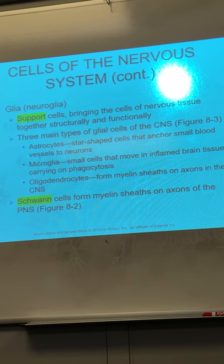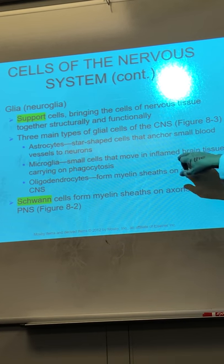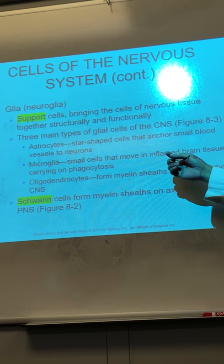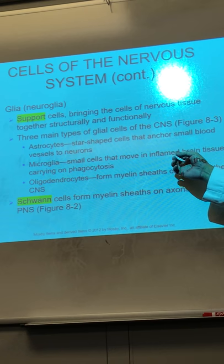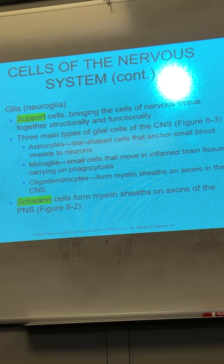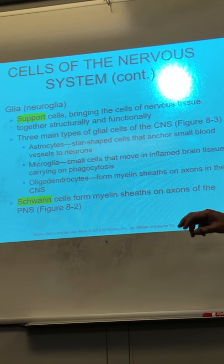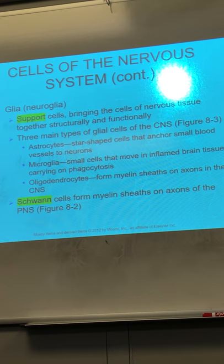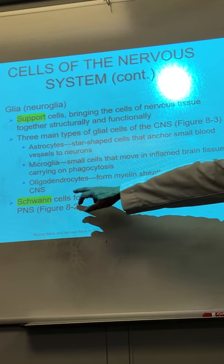Next are the microglia — 'micro' meaning very small, microscopic glia cells — very small cells that move in inflamed brain tissue carrying on phagocytosis. They are the soldiers. They eat up germs, bacteria, foreign bodies. And the last one are the oligodendrocytes; they form the myelin sheath in the CNS.